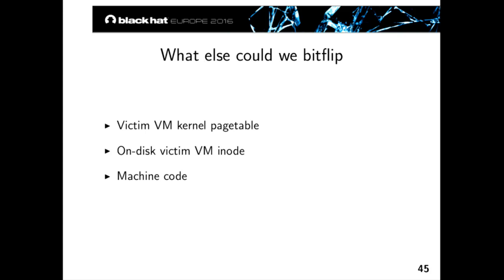Another attack relies on corrupting file system information — specifically the setUID bit in inodes. If you could flip that bit, you can make a binary setUID and then get root easily. More interestingly, we can corrupt machine code by switching instructions to patch security checks. For example, imagine a sudo binary where machine code checks whether your password was successful — if you could patch that test using a bit flip, you could log in with an incorrect password.